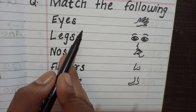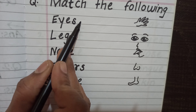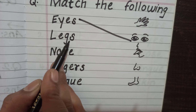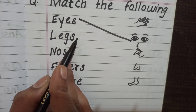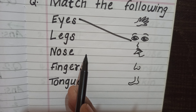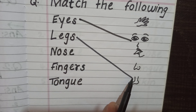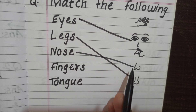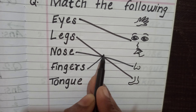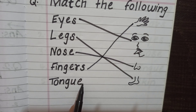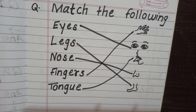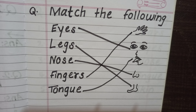Eyes — match. Legs — where is leg? Match. Nose — N-O-S-E, nose. Fingers — first one. Tongue — T-O-N-G-U-E, tongue. It is very very interesting; all of you will like this type of matching question.